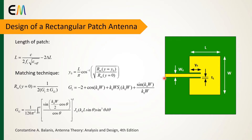One solution is the use of a quarter-wave transformer, which causes a narrow width line and increases the structure dimensions. The second solution is shown in the figure, where the feed line reaches a distance y0 from the slot of the patch, and y0 is obtained from this equation.